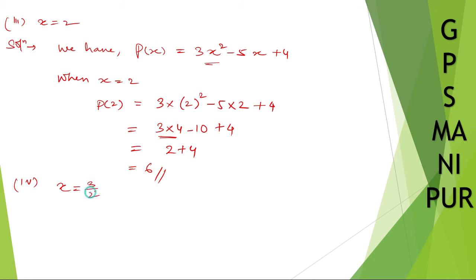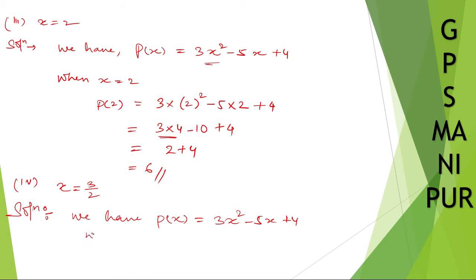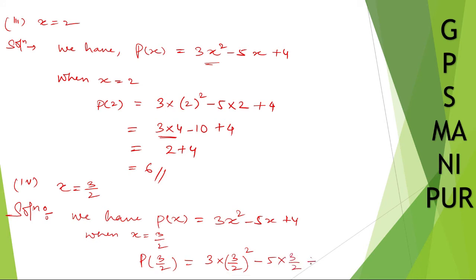Part (iv): x is equal to 3/2. Most students get confused here, but it's very easy. We have p(x) equal to 3x² minus 5x plus 4. When x is equal to 3/2, p(3/2) is equal to 3 into (3/2)² minus 5 into (3/2) plus 4.